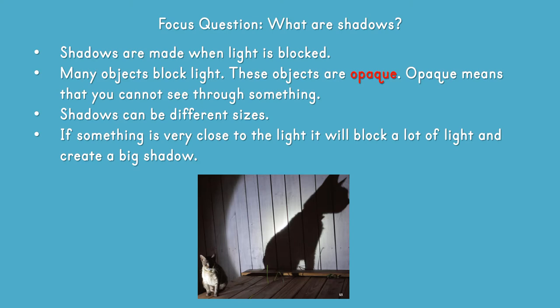And now for our focus question: what are shadows? Shadows are made when light is blocked. Many objects block light. These objects are opaque. Opaque means that you cannot see through something.